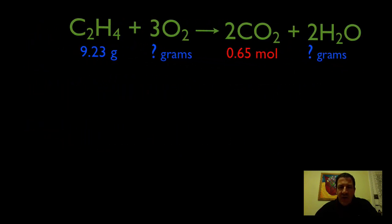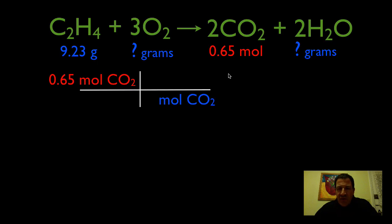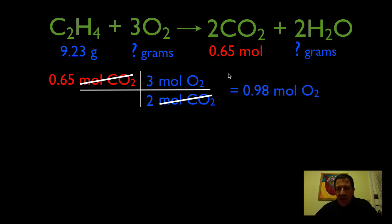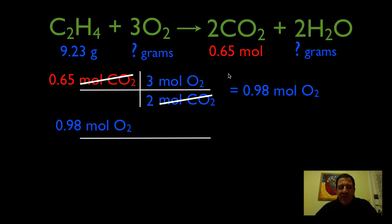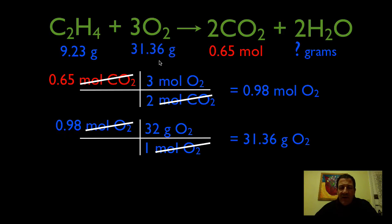Now we're going to do the same thing for oxygen with different molar ratios and molar masses. Starting again with 0.65 moles of CO2, we use the molar ratio — moles of carbon dioxide on the bottom, moles of oxygen on top — with a 2 to 3 ratio. Multiply across: times 3, divide by 2, giving 0.98 moles of oxygen. Then we use the molar mass of oxygen — 32 grams per mole — cancel units, and get 31.36 grams of oxygen.